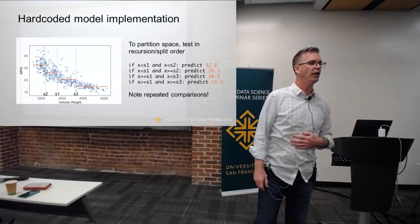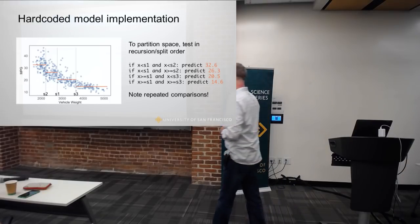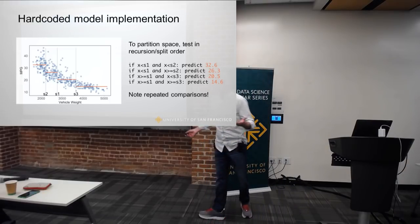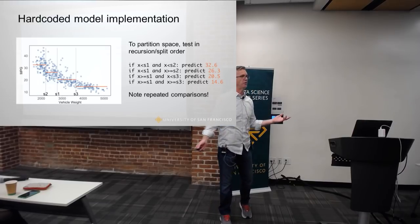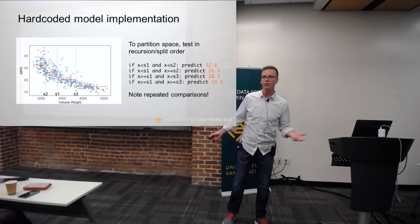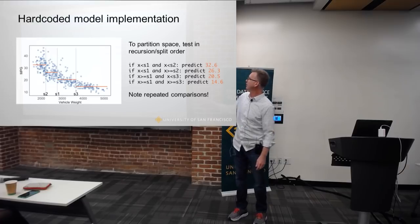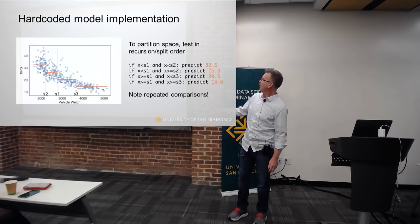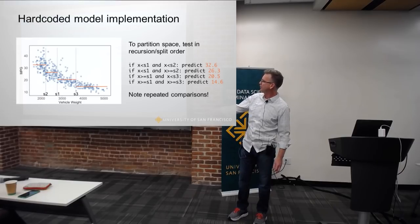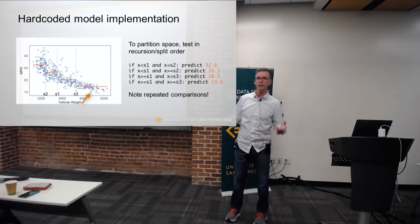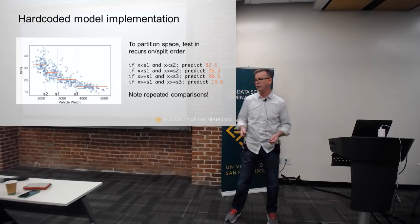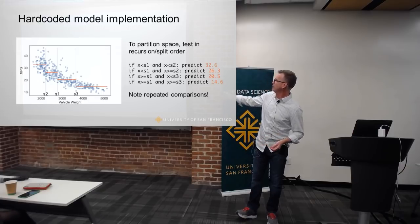Let's implement this thing. Given a set of regions with predictions, it's pretty easy. I'll say: if it's less than S1 and less than S2, it's this region; if it's less than S1 but greater than or equal to S2, it's this region; and so on. A trivial set of Python code. The predictions are simply the average of all the values in each region.